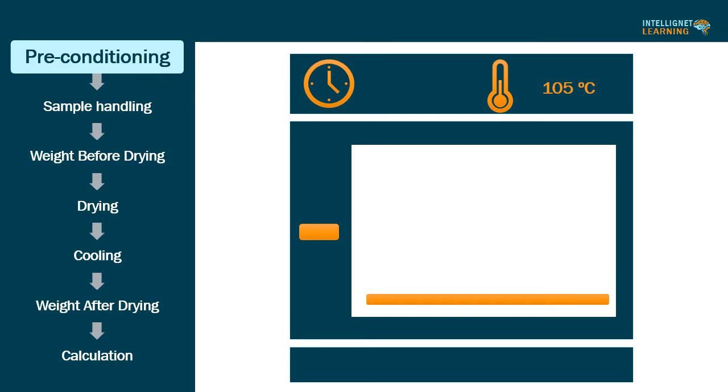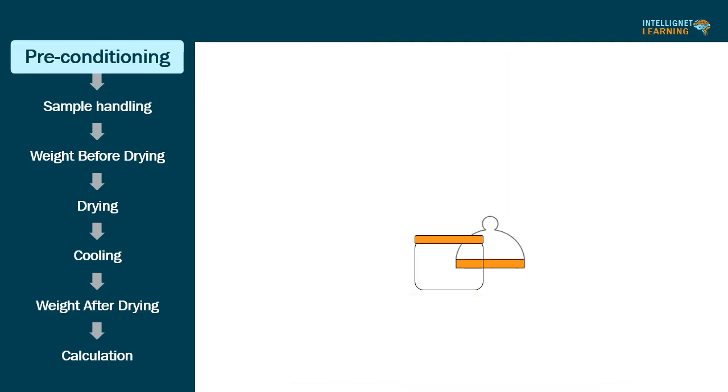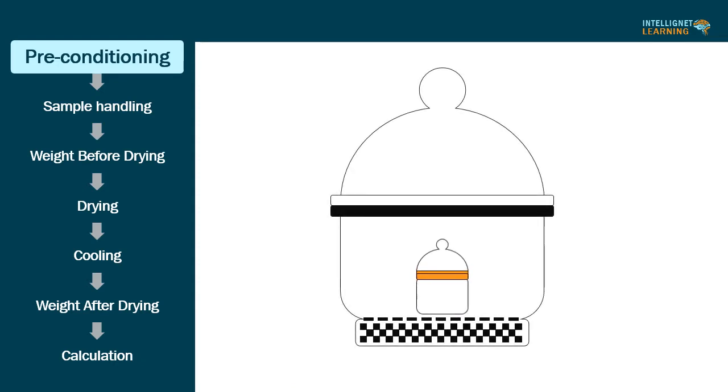First step, preconditioning: Set the temperature of the drying chamber as per the method of analysis. Maintain the temperature of the drying oven at plus or minus 2 degrees Celsius. After reaching the desired temperature, dry the glass stoppered weighing bottle for about 30 minutes at the same temperature. Remove the glass stoppered weighing bottle from the drying chamber and cool to room temperature in a desiccator.